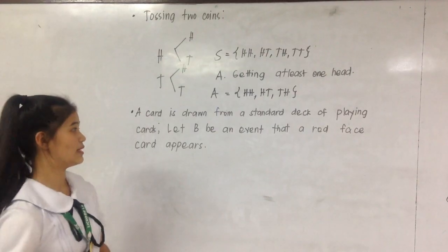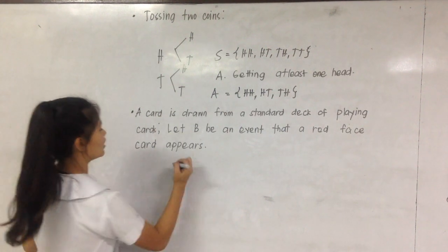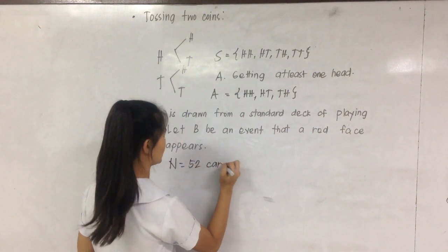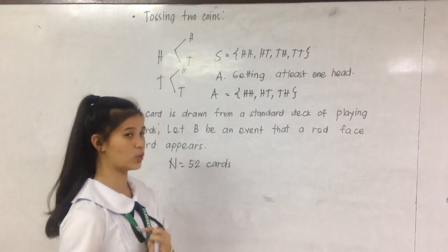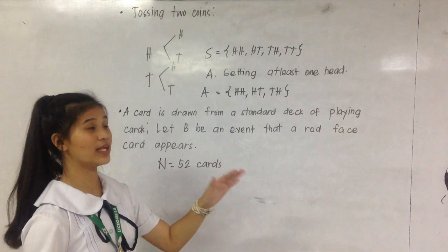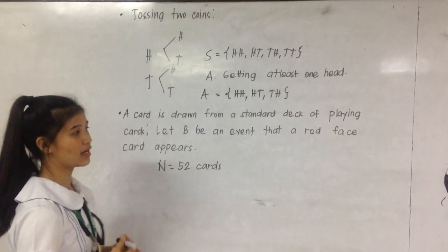Next example is a card is drawn from a standard deck of playing cards. Standard deck of playing cards are only 52 cards. Some are mistaken that it is 54 because of the presence of the jokers. Let event B be an event that a red face card appears.